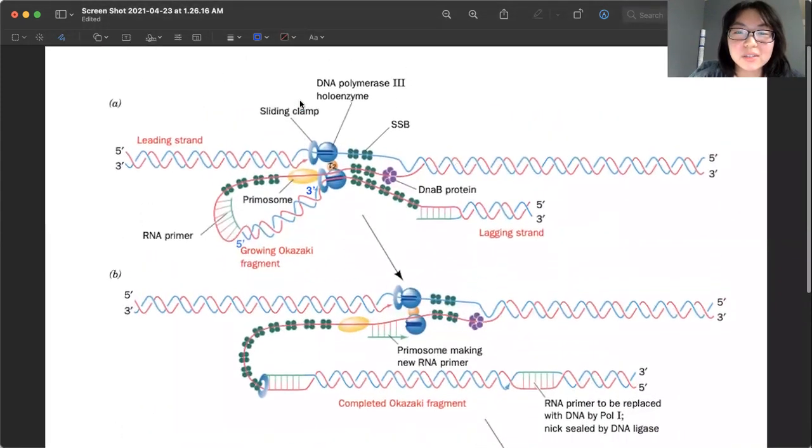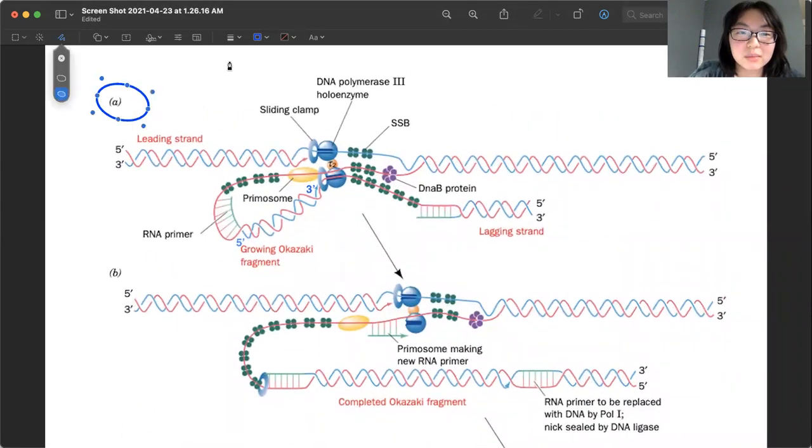So basically, if we were to just focus on part A for now, let's see that the three prime to five prime blue strand right here is the parent strand, and this five prime to three prime red strand is the part that will be synthesized.